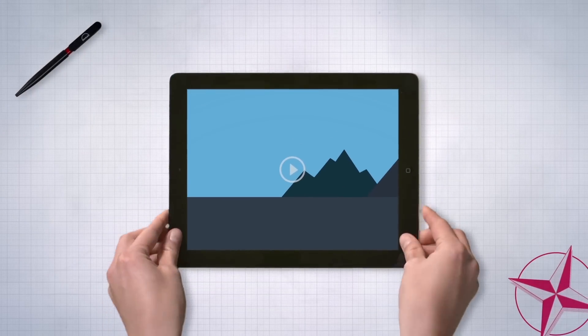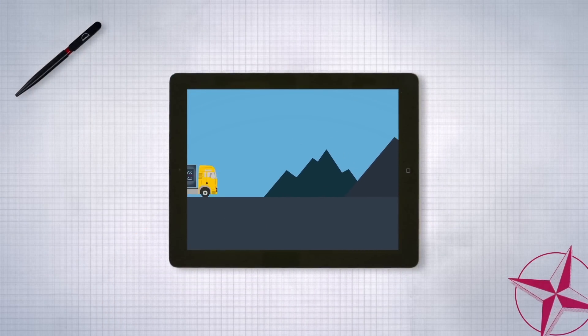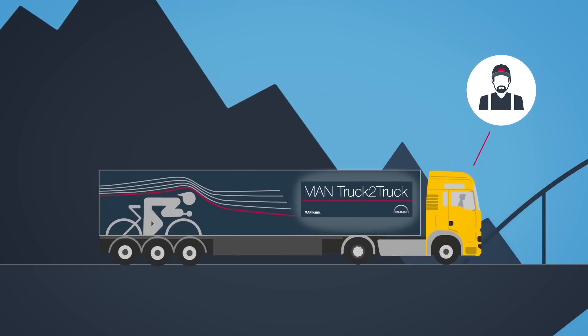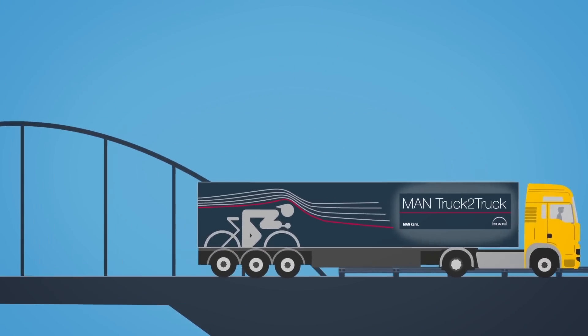And this is how platooning works. The first vehicle is steered by a professional driver. The next vehicle in the convoy only has to follow it.